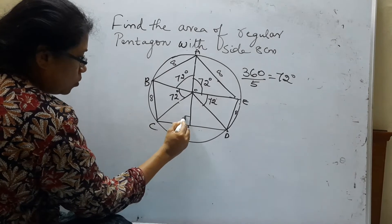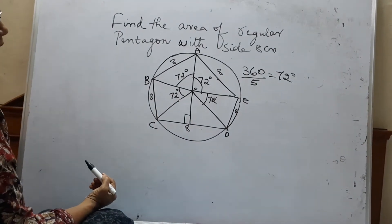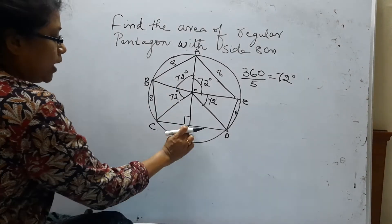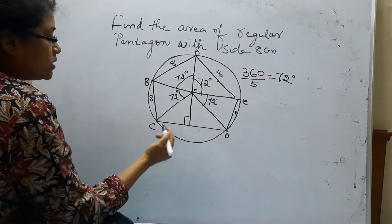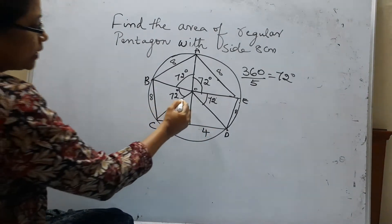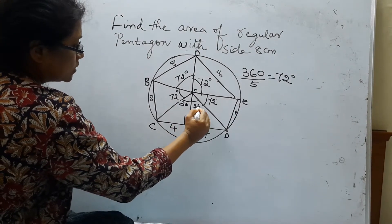So the radius is not given. I am going to find out the radius. Now if I draw the altitude, it divides the CD into 2 equal halves, so it becomes 4 and 4. And the angle is also split into 2 equal halves, 36 and 36.